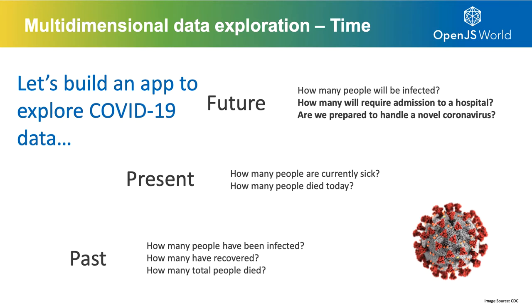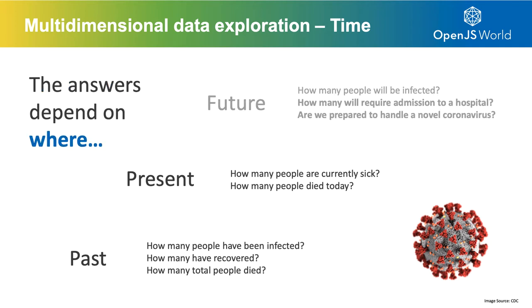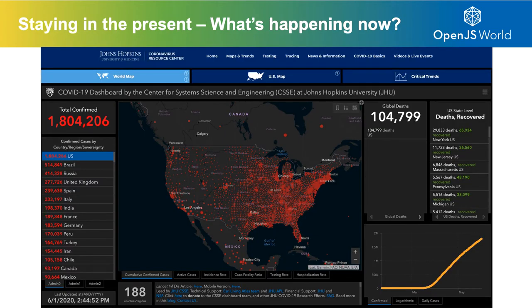When it comes to mapping COVID-19, the most obvious dimension to use is time — not just what is happening, but when is it happening. You might ask: how many people are currently sick, how many new test results were reported today, or how many people have been infected or died to date? Those have been the predominant questions asked, and you've seen that with hundreds, even thousands of mapping applications, such as this dashboard showing cases reported per day by geography.